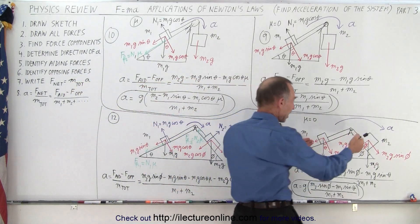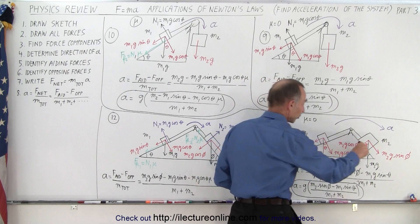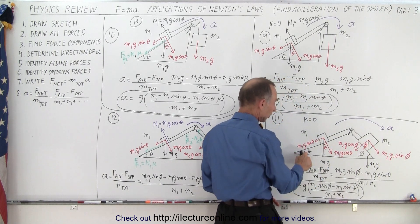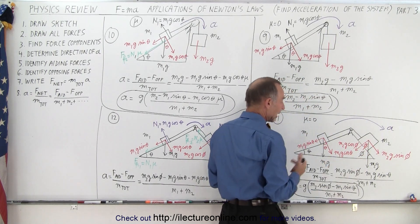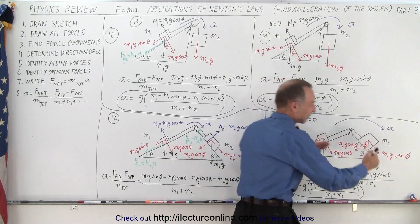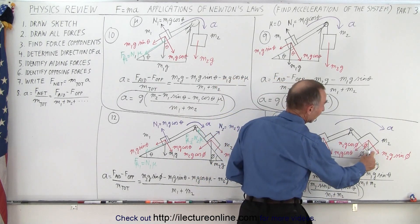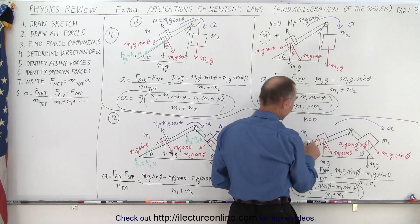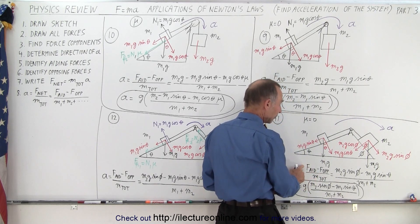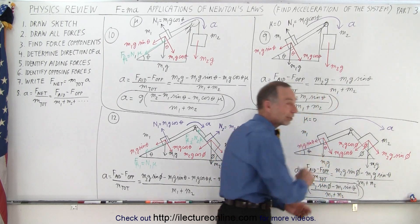What if you have a system with two masses on two inclines? First we take the example with no friction. You have two forces of gravity, subdivided into parallel and perpendicular components. We call one angle theta and the other phi. Assuming acceleration moves toward the larger block, the aiding force is M2g sin phi and the opposing force is M1g sin theta. The acceleration equals M2g sin phi minus M1g sin theta, divided by the total mass.